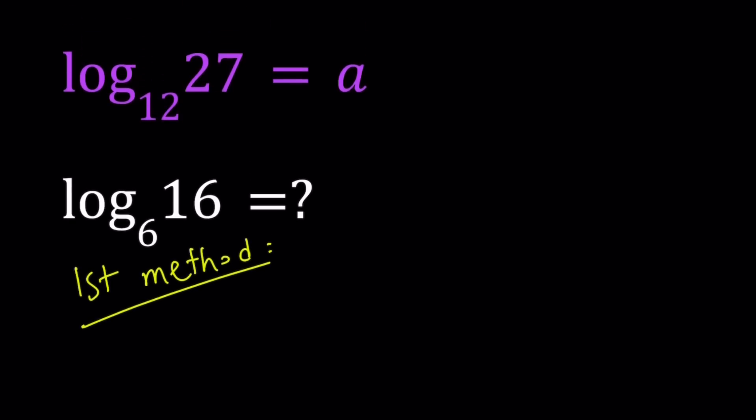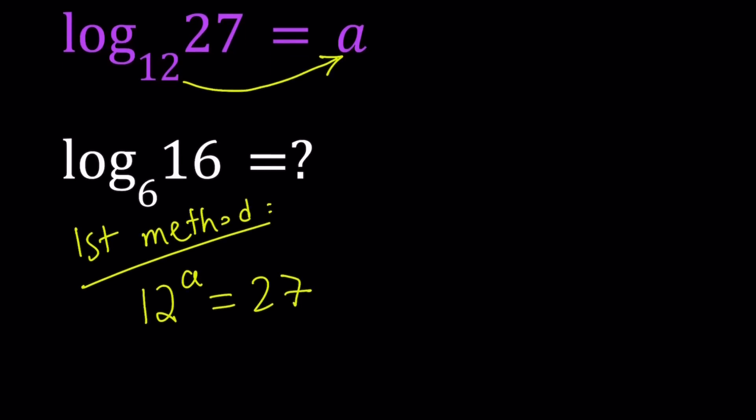So for my first method, I'm going to be using an exponential approach as opposed to a logarithmic approach. By using the definition of logs, we can write from the first equation 12 to the power A equals 27. If you're not familiar with logs, that's basically what it means. We're writing an exponential equation in a different way.